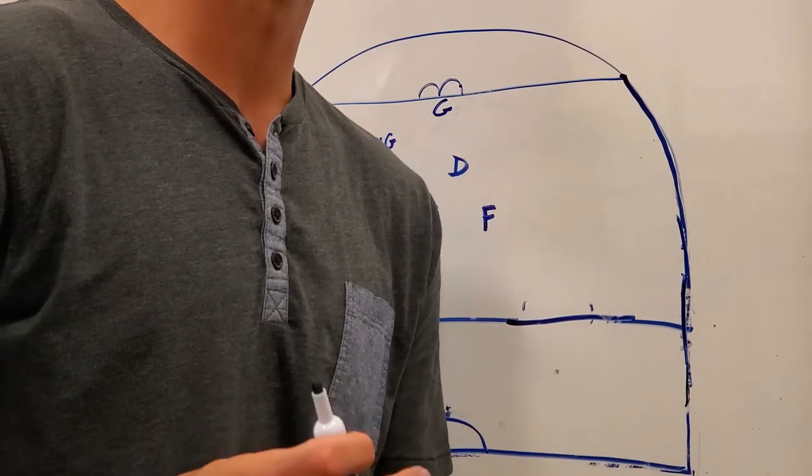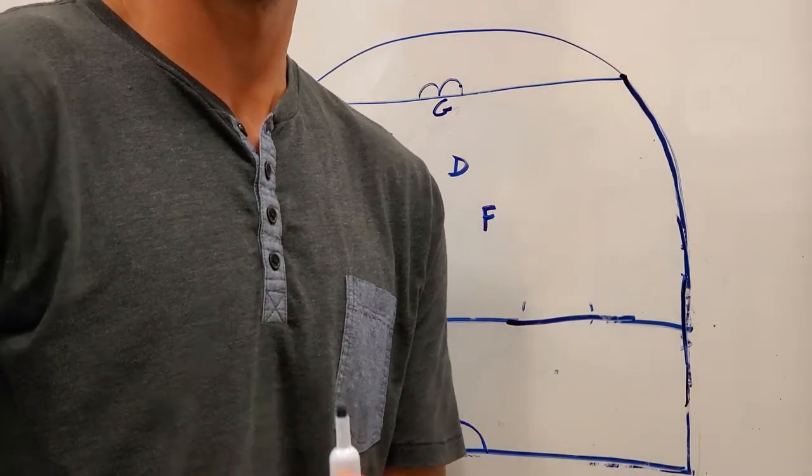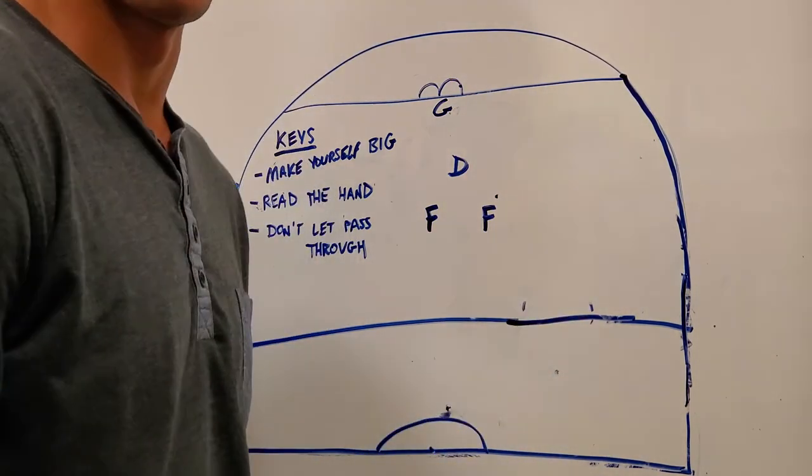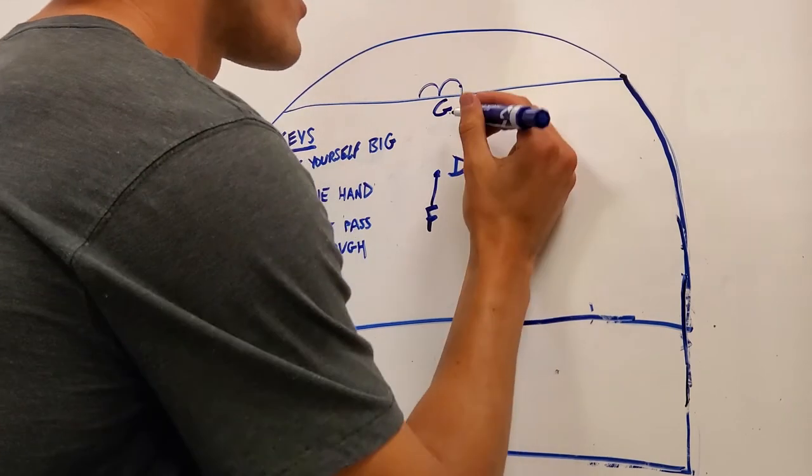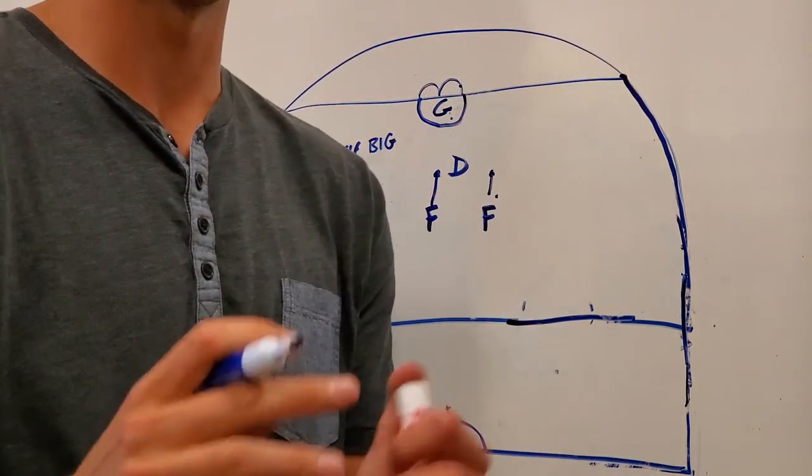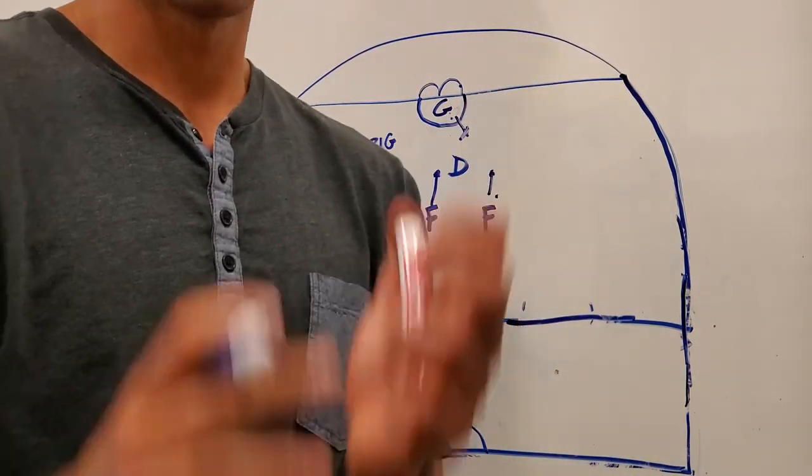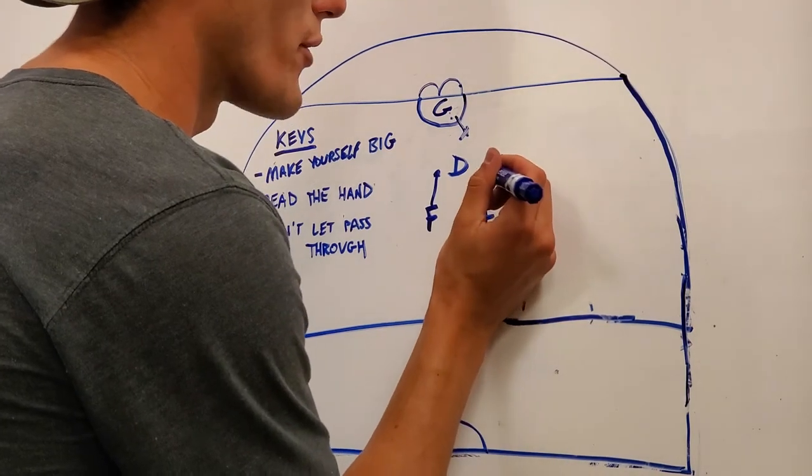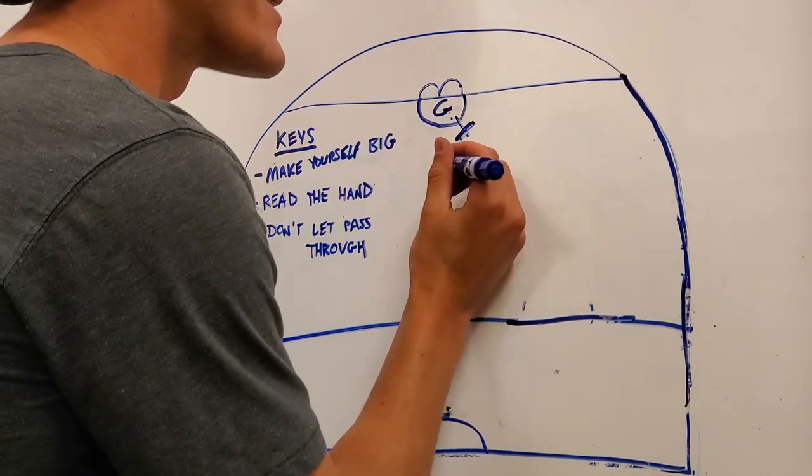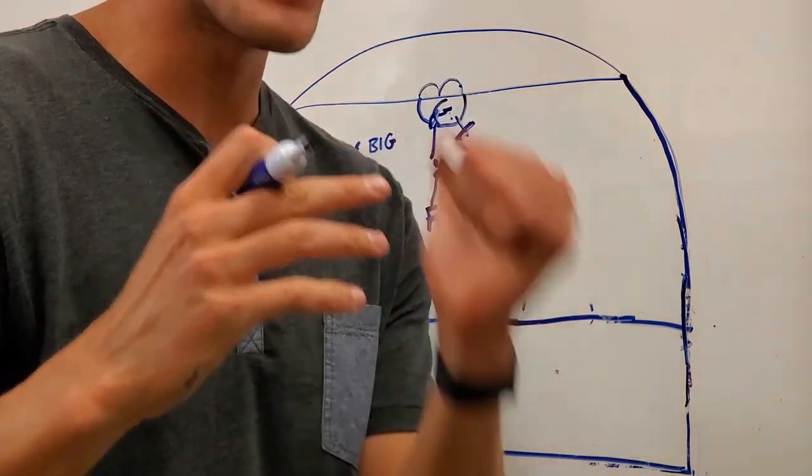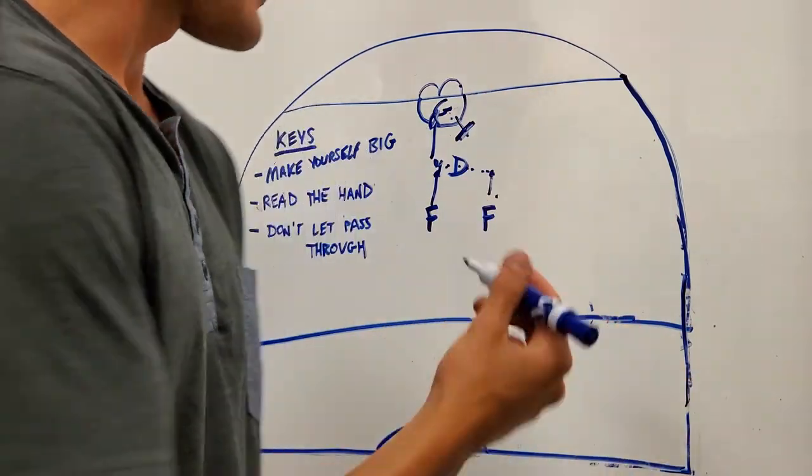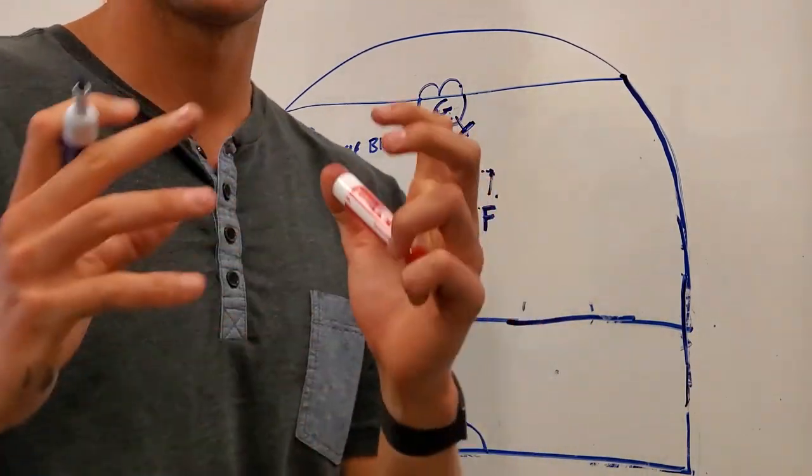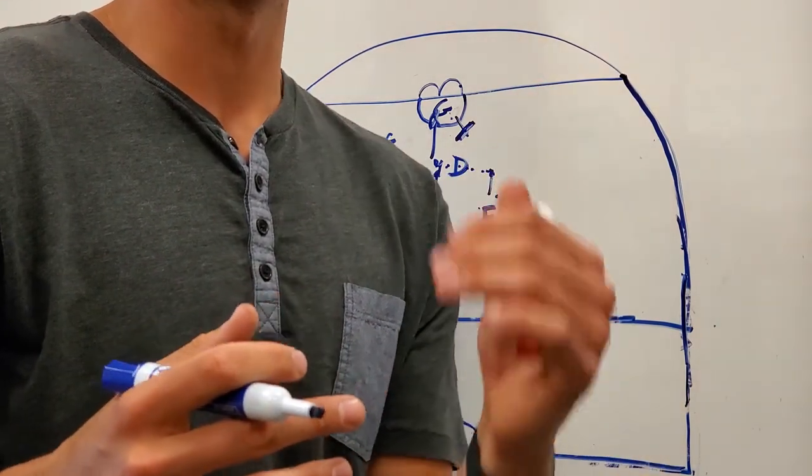The most important thing for a defenseman playing a two-on-one is never ever ever let the pass go through. As a goalie, you want to trust your defenseman so much that you can just play that shot. But if you let this pass go through and the goalie is so set on making that save, it's going to be an automatic goal every single time. You're in an odd man situation, they might get a shot, but if you can limit their scoring chance and opportunity to a lesser percentage, that's the main goal.